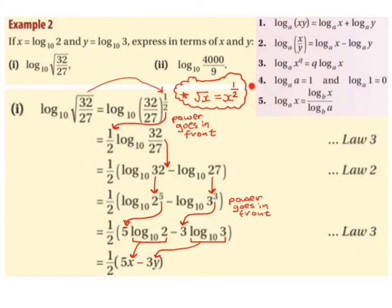You will be given these formulas in your formula tables in the Leaving Certificate exam, but it's important to get as familiar with them and how they work as possible. In our next step, we are going to change 32/27 to log base 10 of 32 minus log base 10 of 27.